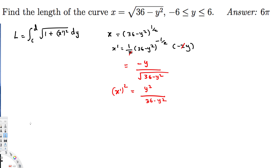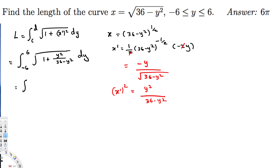The limits of integration are already provided: -6 to 6. Plugging in, we have the integral from -6 to 6 of √(1 + y²/(36 - y²)) dy. Taking the common denominator of (36 - y²), the numerator becomes (36 - y²) + y², and the y² terms cancel.